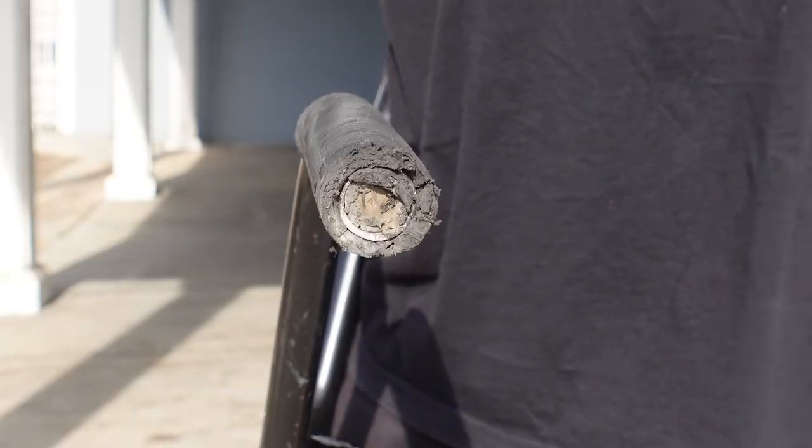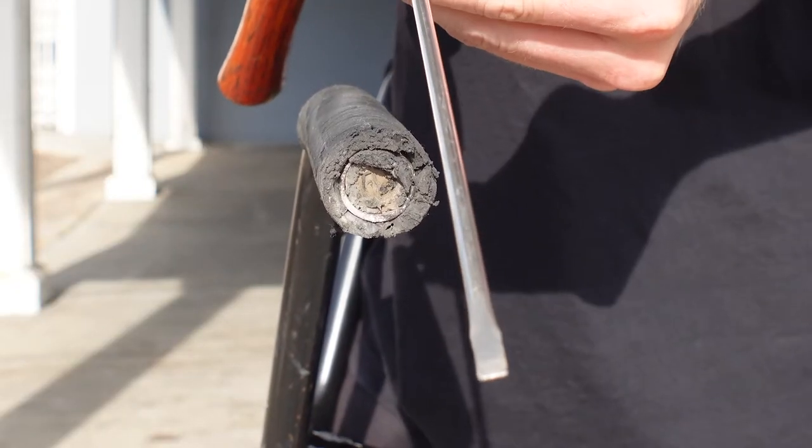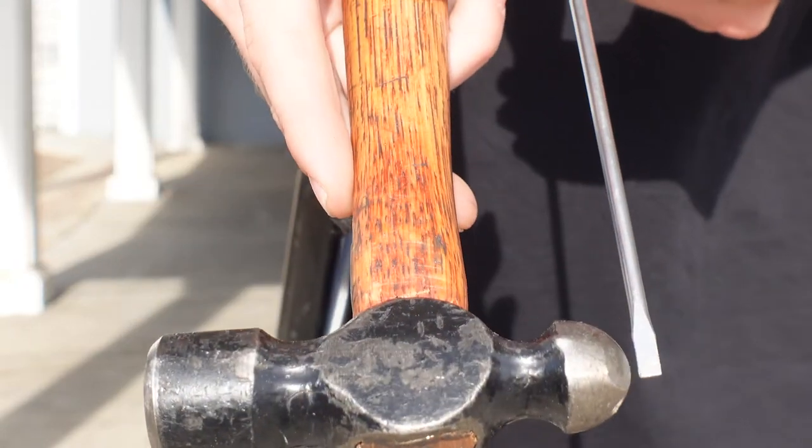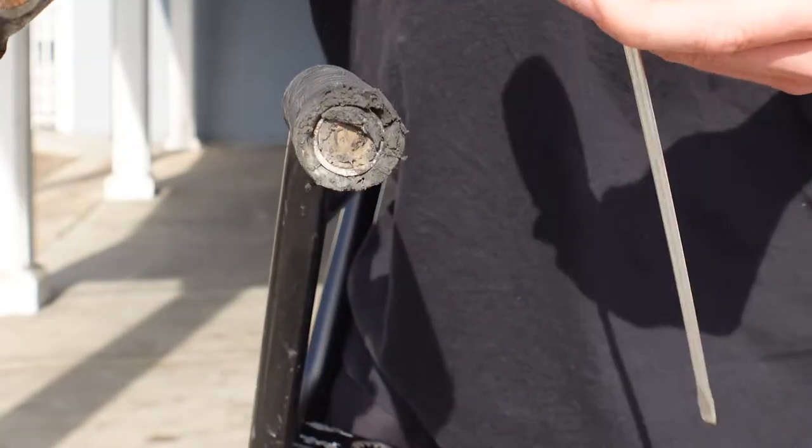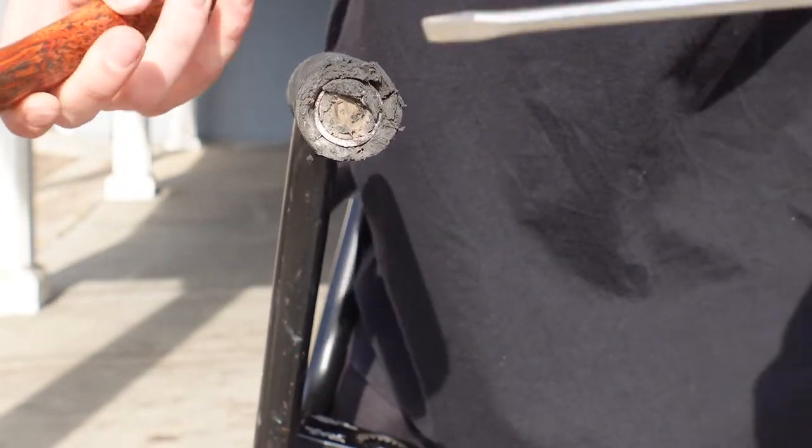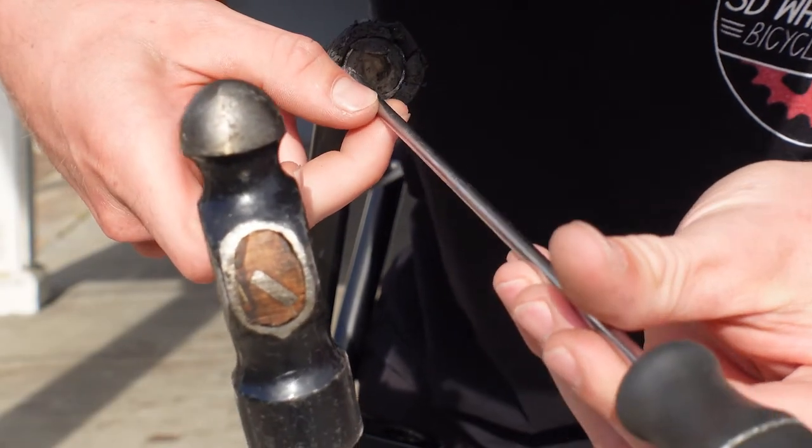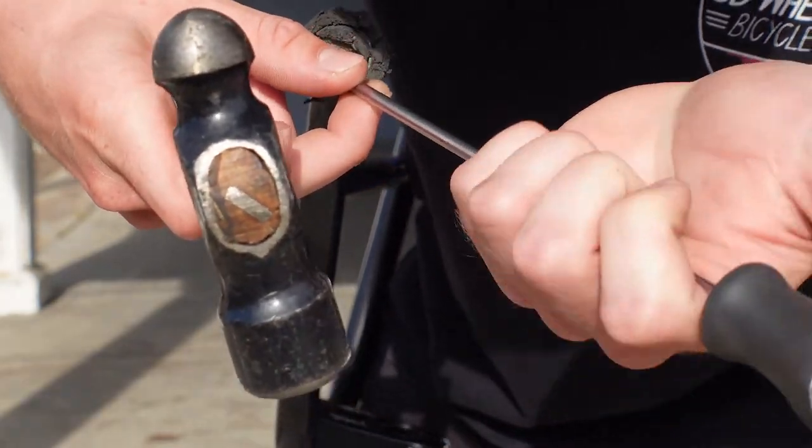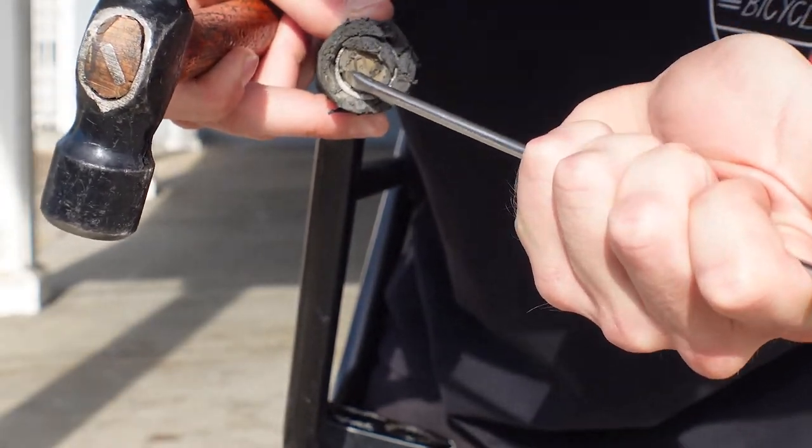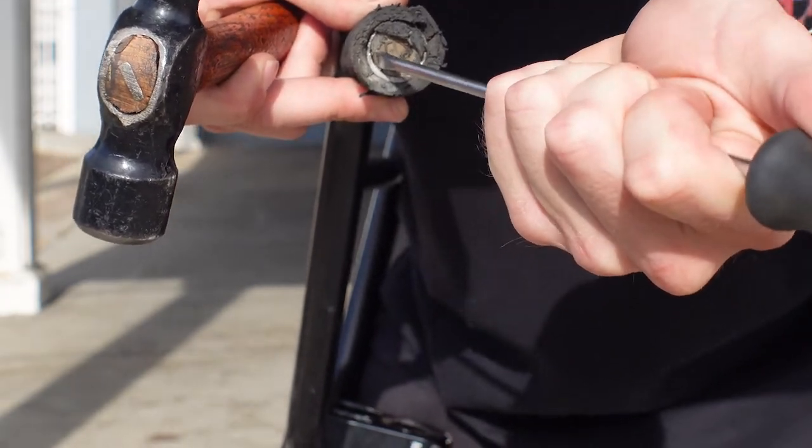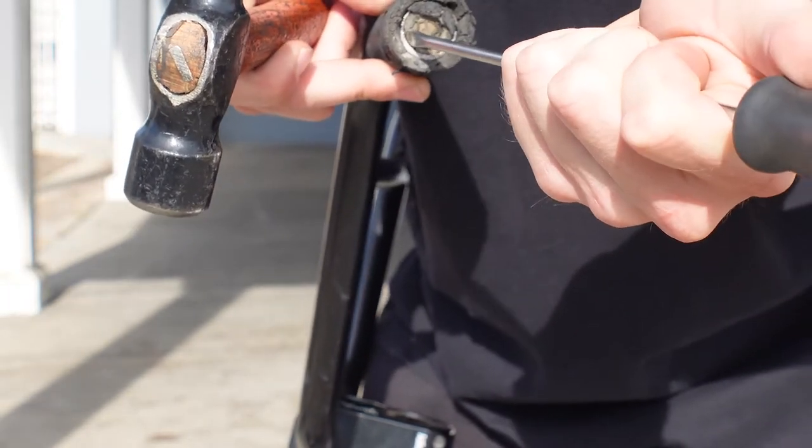There's also a different method you can use. You can use a flathead screwdriver and your hammer and simply put the flathead screwdriver on the edge where the bar end is. Be careful because you can stab yourself and you don't want to do that.